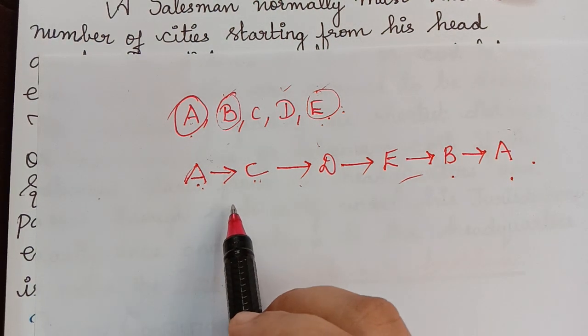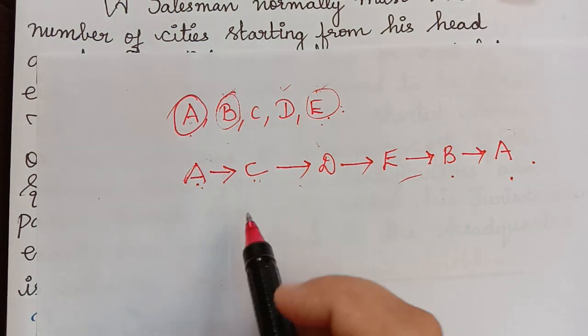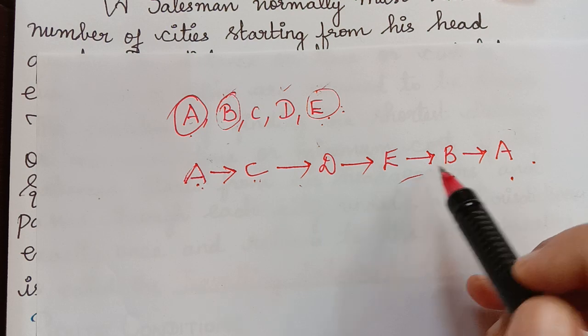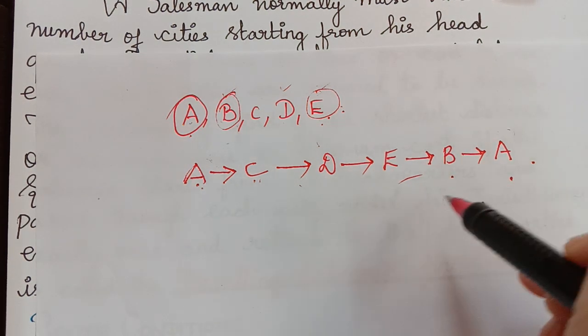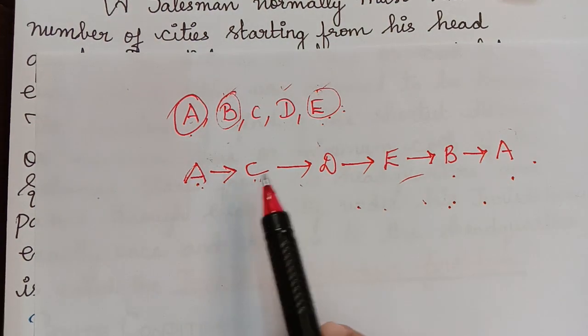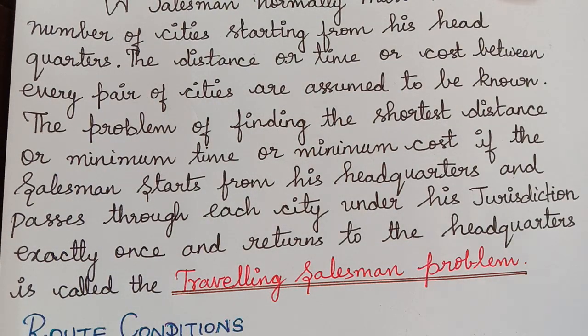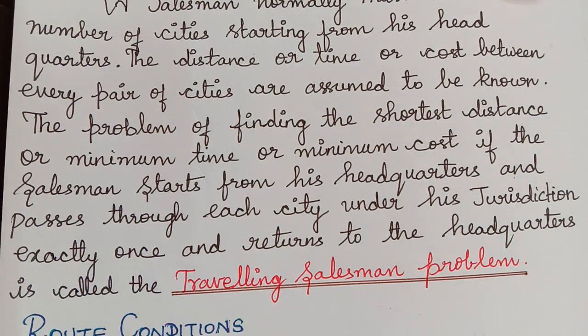So this is the criteria for a traveling salesman problem and the cost of the visit or the time taken to visit or the distance traveled will be evaluated and that has to be optimal, that is minimum. So this is known as a traveling salesman problem. A traveling salesman problem is also known as traveling salesperson problem.